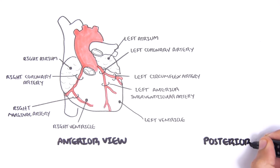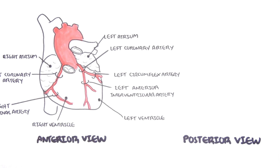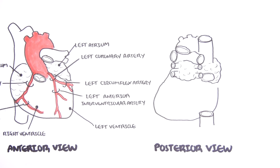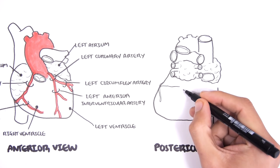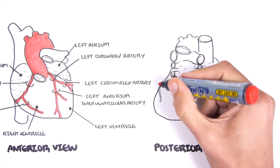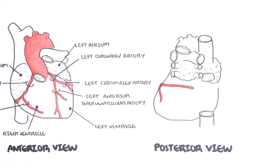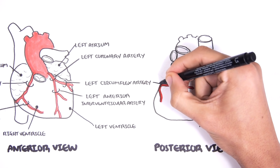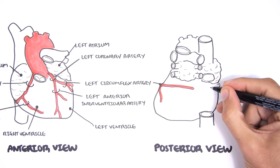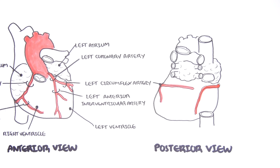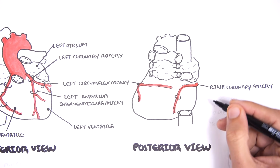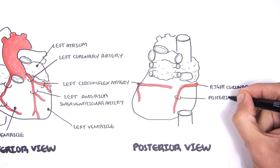Let's look at the posterior view of the heart. Here I'm drawing the left circumflex artery which is wrapping around the left side of the heart. On the other side on the right, the right coronary artery is wrapping around the right. The right coronary artery gives off the branch called the posterior interventricular artery.